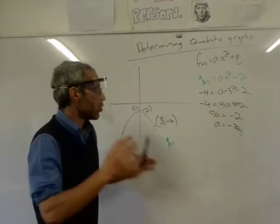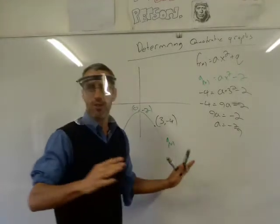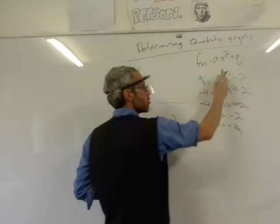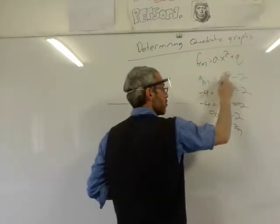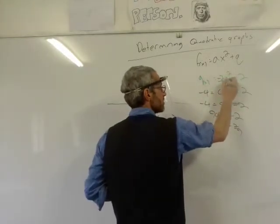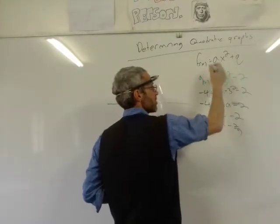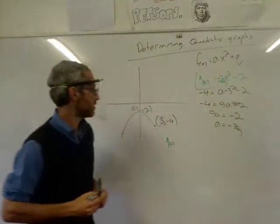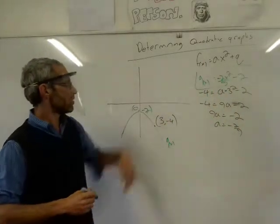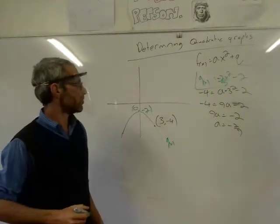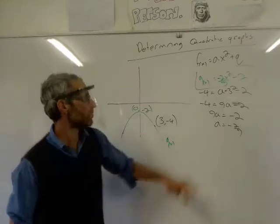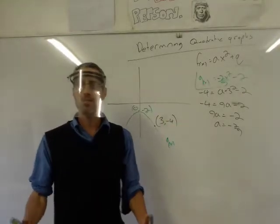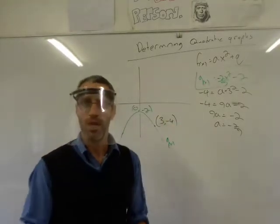And then don't forget — when you've got these questions in the test, don't forget — eventually, you need to write down the formula, because that was really the answer to the question: write down the formula of this graph. Don't forget yourself. Alright, are we okay with this?